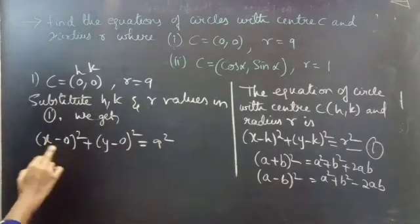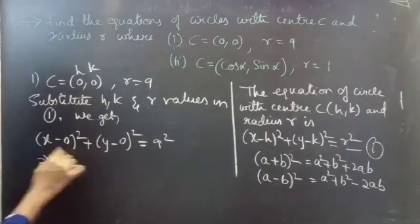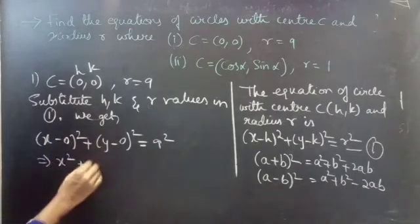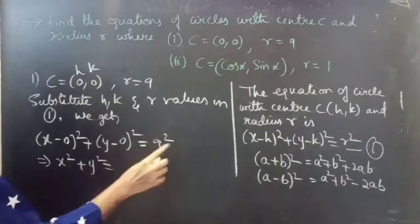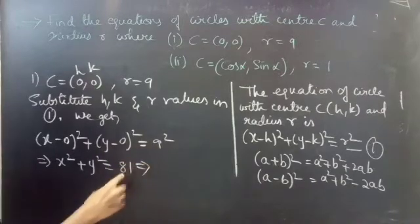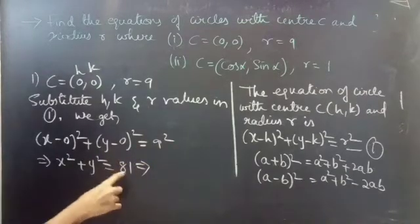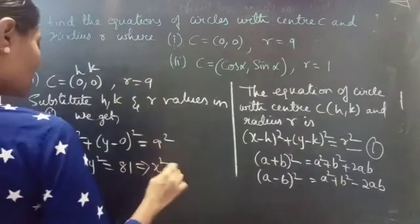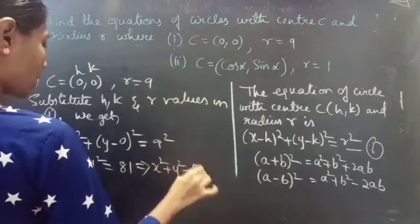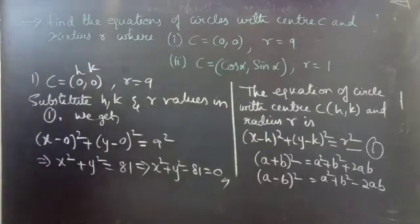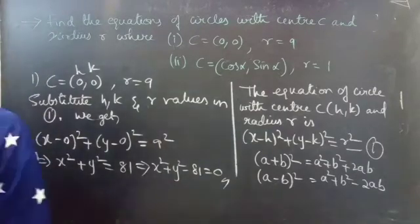We get (X − 0)² + (Y − 0)² = 9², which gives X² + Y² = 81. Now take 81 to the left-hand side, so we write X² + Y² − 81 = 0. This is the required equation.